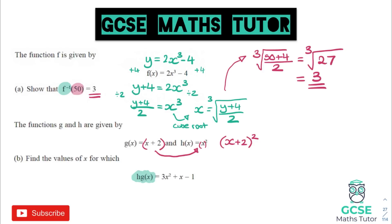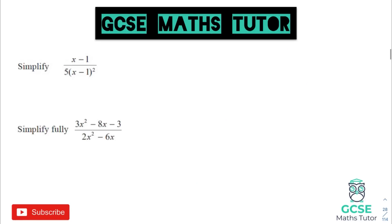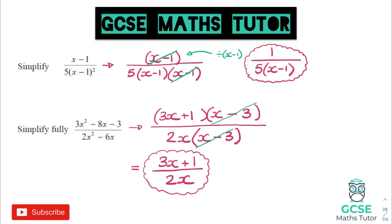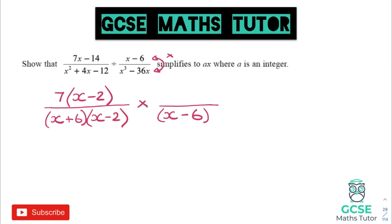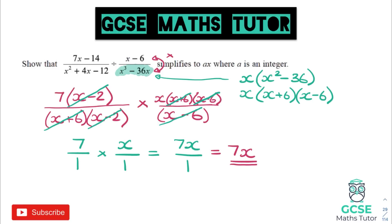For hg(x), substitute the function g into h, putting brackets around it and swapping what's in the brackets — then expand, simplify, make it equal zero, and solve. For algebraic fractions, look for common factors to cancel on the top and bottom — remember if only the top simplifies, it turns into 1. For harder ones with quadratics, factorize and cancel common brackets. For division of algebraic fractions, factorize everything and flip the second fraction — you can also cross-cancel if something on the bottom of the left matches the top of the right.